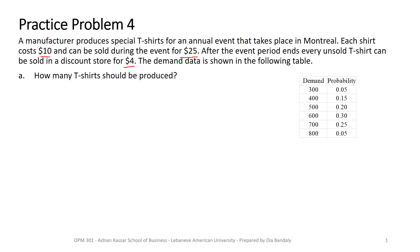How many t-shirts should be produced? As we learned before, we need to find the optimal service level, and to find that we need the stockout cost and the surplus cost. The stockout cost is the lost profit, equal to price minus cost, which is $15.